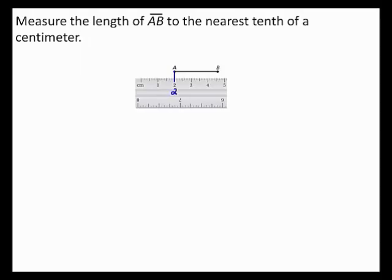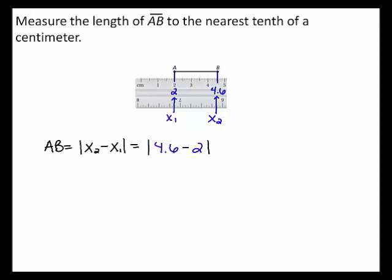Next, you need to estimate the coordinate of B. B appears to align with 4 and 6 tenths. Now, by the ruler postulate, the distance between points A and B is equal to the absolute value of the difference of the coordinates of A and B. Let x1 equal 2 and x2 equal 4 and 6 tenths. You can substitute these values in for x1 and x2. When you simplify, 4 and 6 tenths minus 2 gives you 2 and 6 tenths, and the absolute value of 2 and 6 tenths is 2 and 6 tenths.